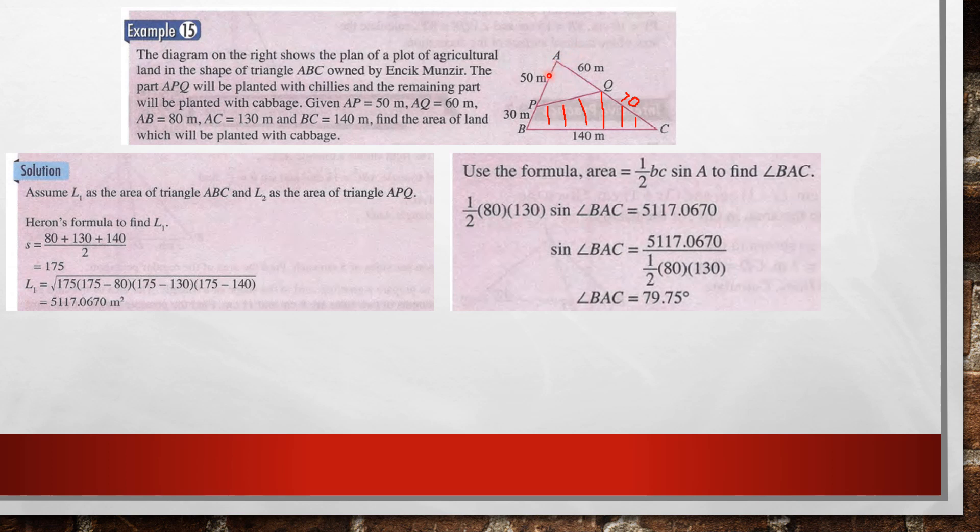You can use the formula area just now that you found, 5,117.0670. Then you use the formula, another formula area that you learned before Heron's formula. That is half BC sine A. So you know this angle, this side 80, and this side is 130. So half times 80 times 130 times sine A will be the area, 5,117.